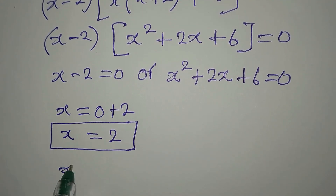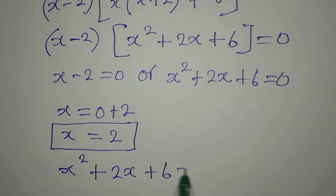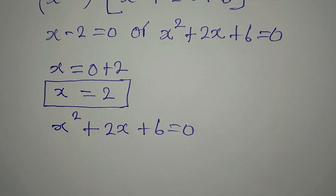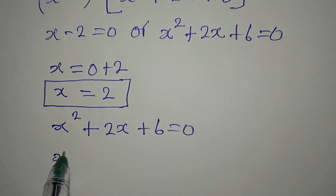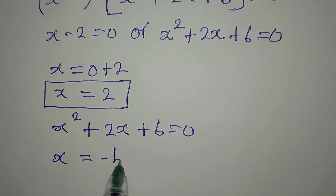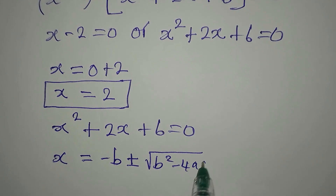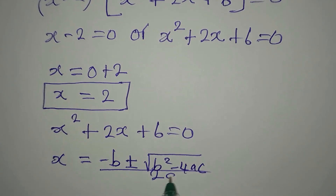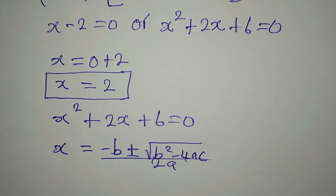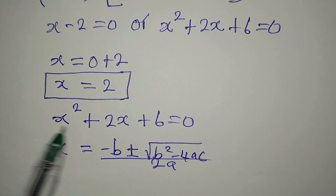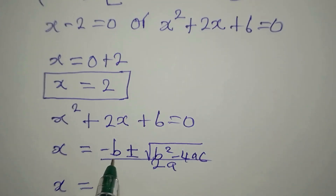We still need to deal with x² plus 2x plus 6 equals 0. This is a quadratic equation, so we expect two more solutions. Using the quadratic formula: x equals minus b plus or minus square root of b² minus 4ac, all over 2a. Here a equals 1, b equals 2, c equals 6.